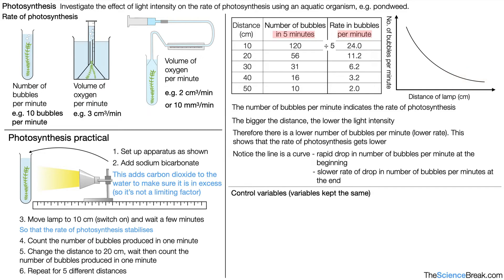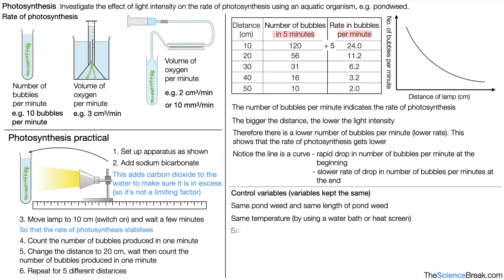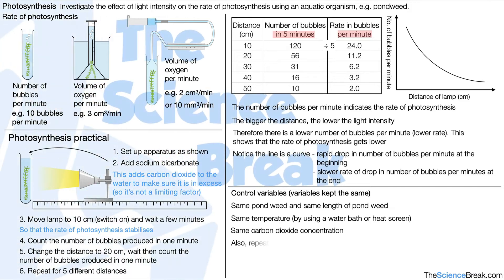Our control variables are things we keep the same: the same pondweed and same length of pondweed; the same temperature using a water bath or heat screen; the same carbon dioxide concentration achieved by adding sodium bicarbonate. We would also repeat the experiment three times for each distance and take a mean.